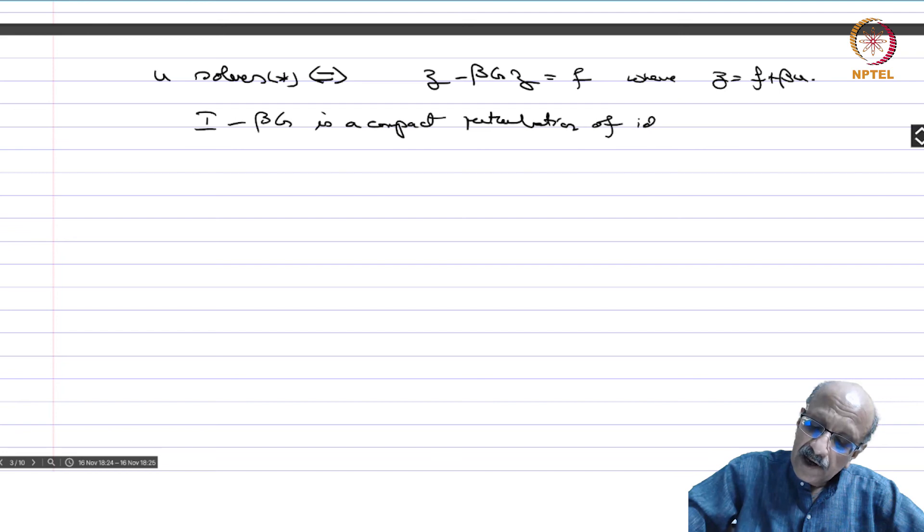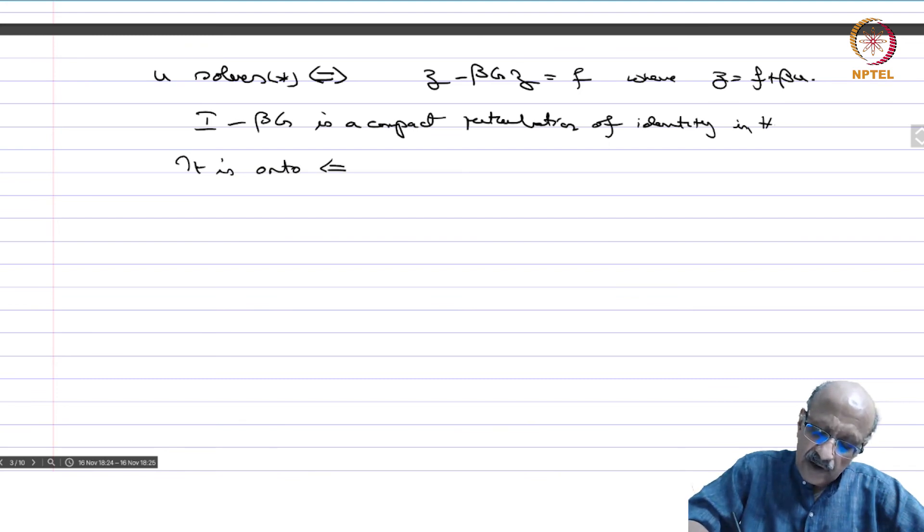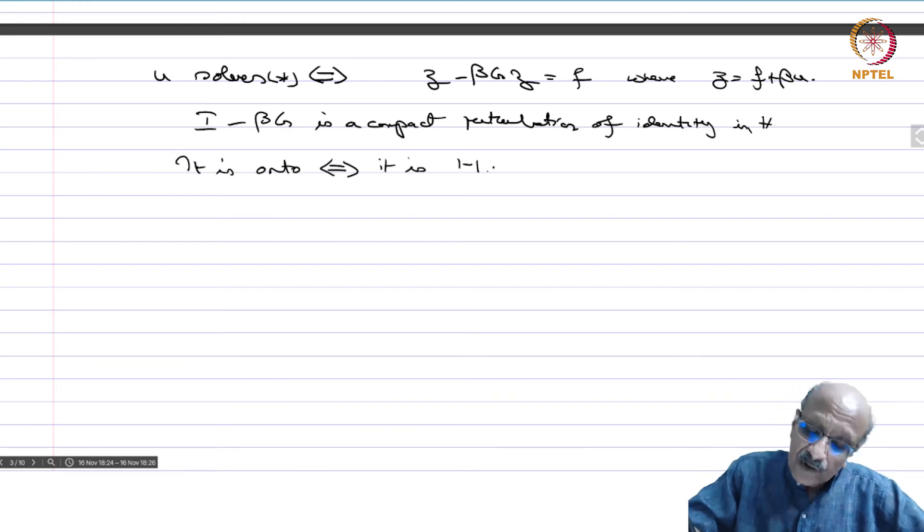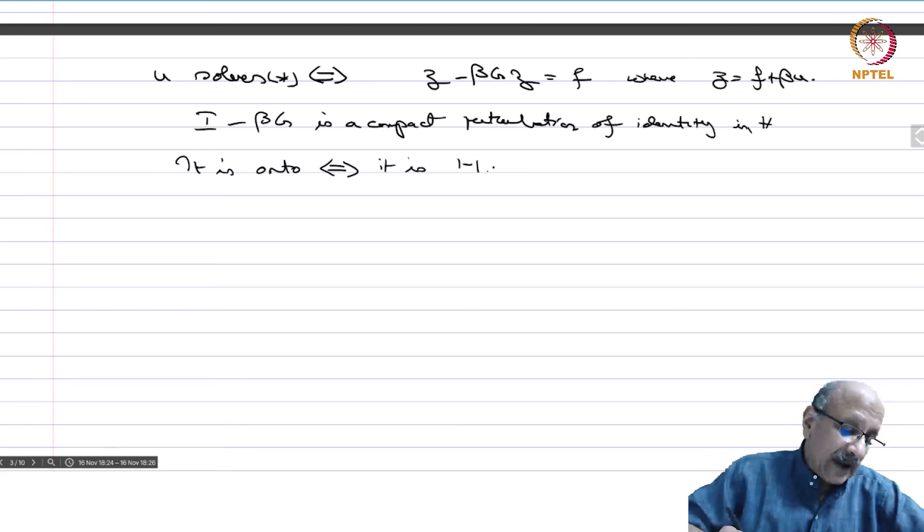If you want to solve for any F, it's onto if and only if it's one-to-one. This is the beauty of this theory. If the solution exists then it's unique. So you prove uniqueness—that's much easier—and that implies automatically that there exists a solution for any data.